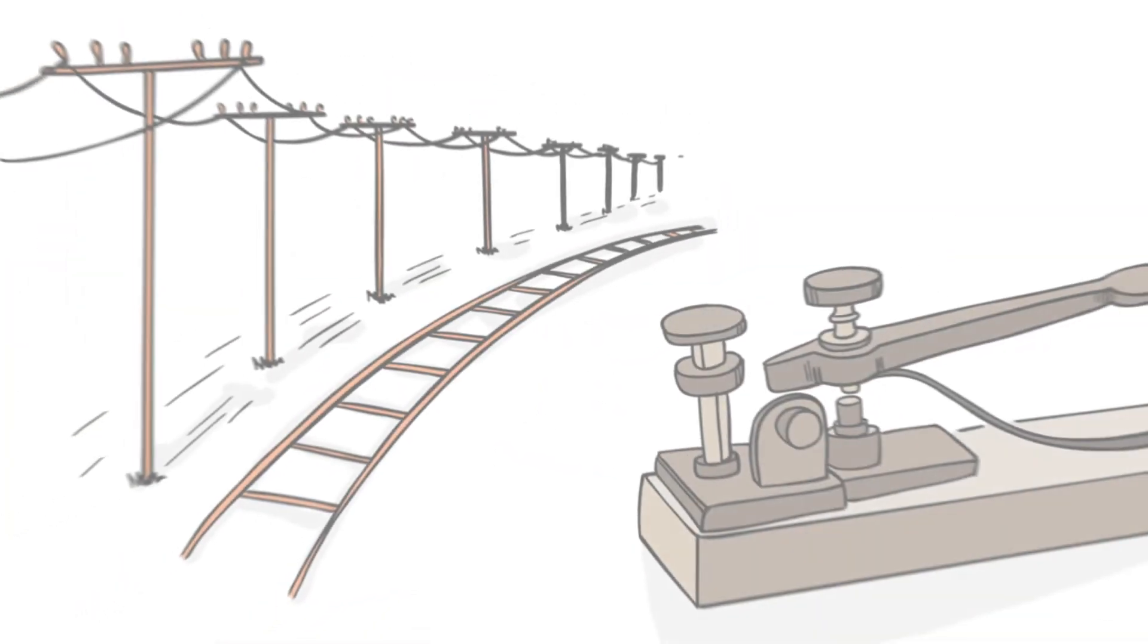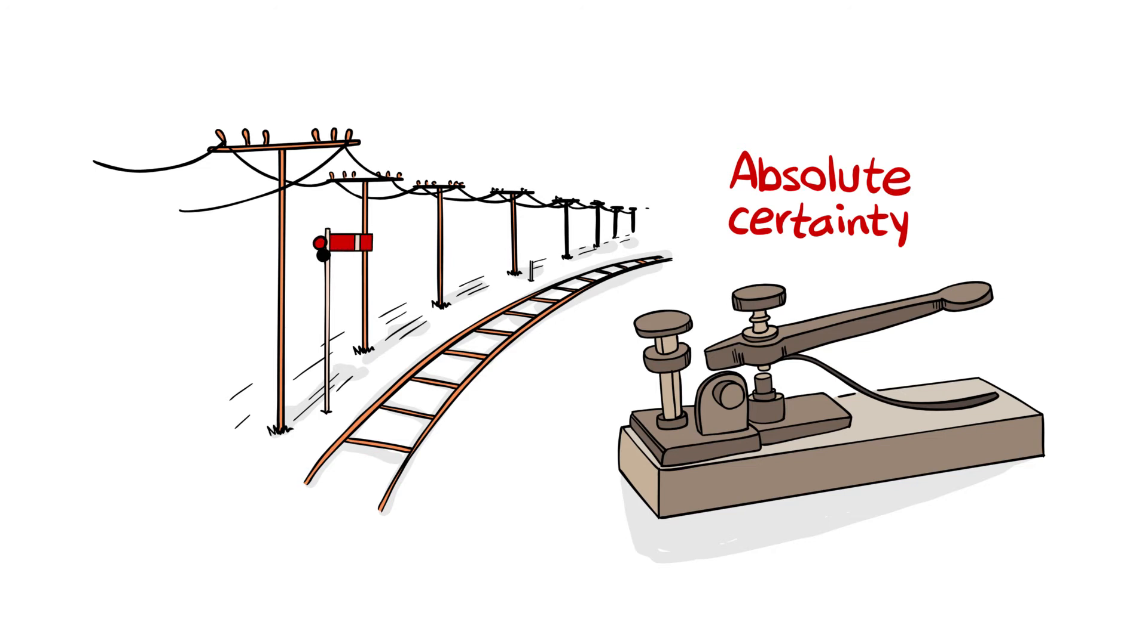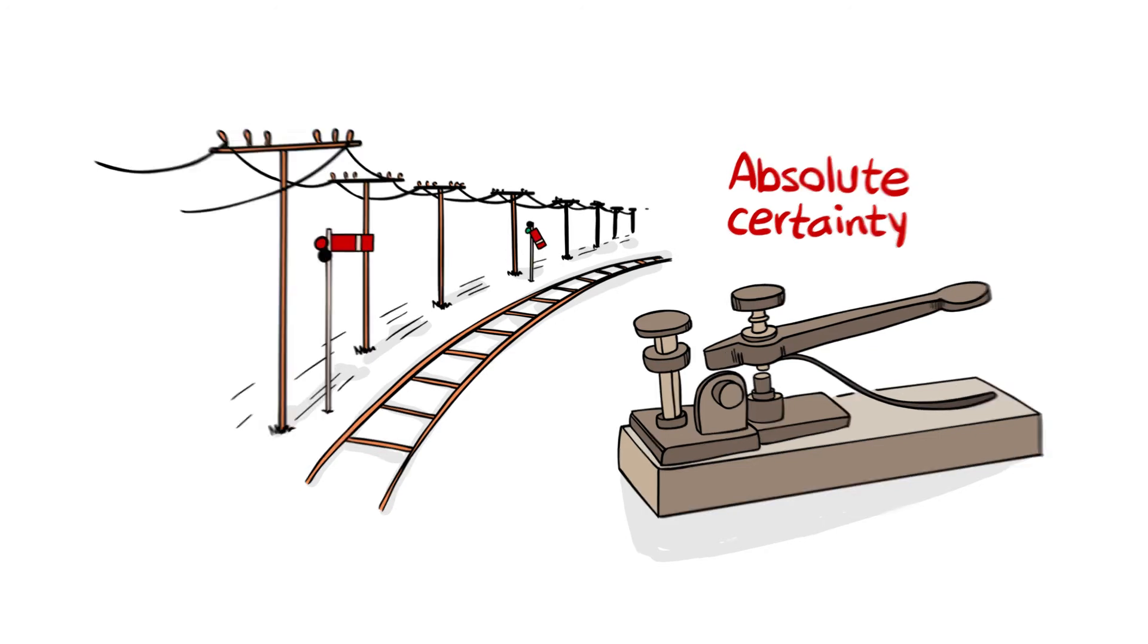The absolute block method gave absolute certainty that a track section ahead is clear before the next train is permitted to enter.